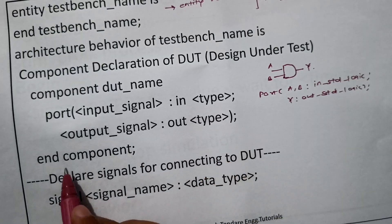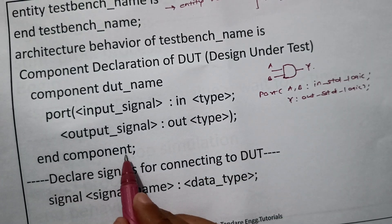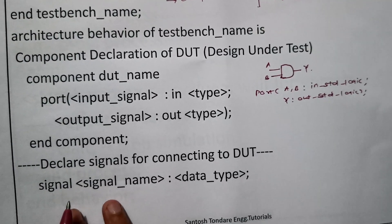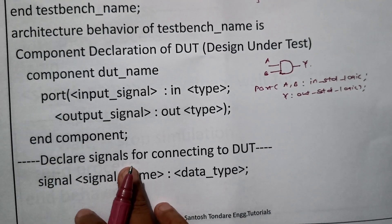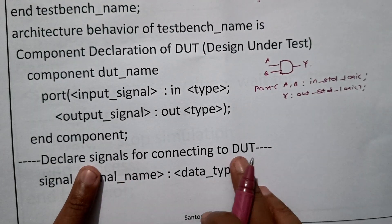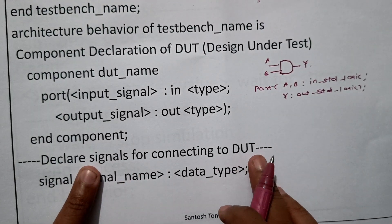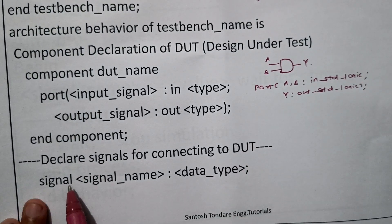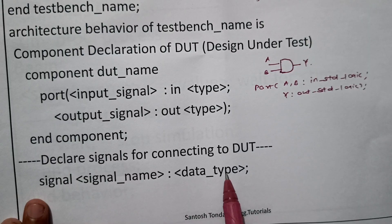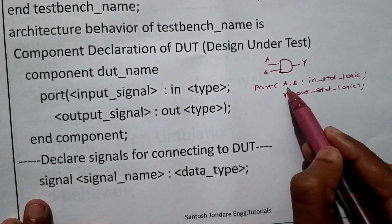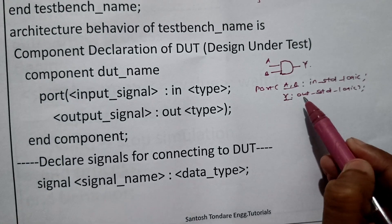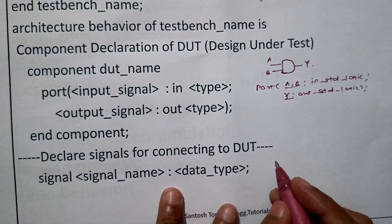After the component declaration, we proceed to signal declaration. These signals directly connect to the Design Under Test we have defined. The standard form is: signal name and data type. For the AND gate we have two input signals A and B, and one output signal Y — all of standard logic type.